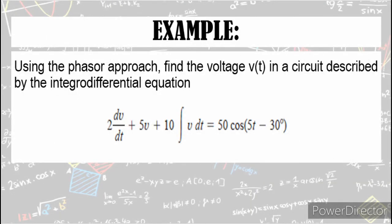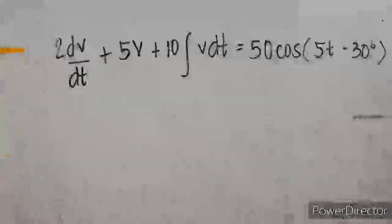Now, let's have another example. Using the phasor approach, find the voltage V(t) in a circuit described by the integral differential equation: 2dV/dt + 5V + 10∫V dt = 50cos(5t - 30°).